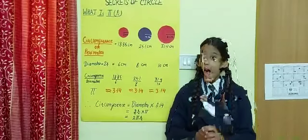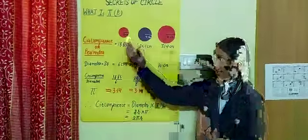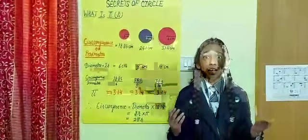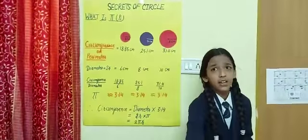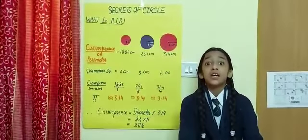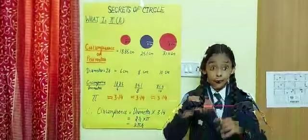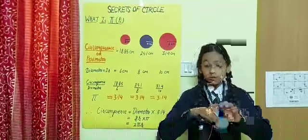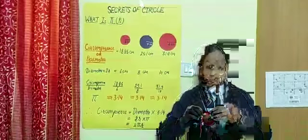Here are 3 circles of 3 cm, 4 cm and 5 cm. The circumference of circle cannot be measured with ruler as it is curved in nature. We have to use thread. Now I am going to measure the circumference of the circle.